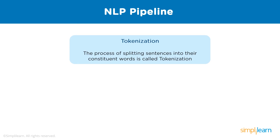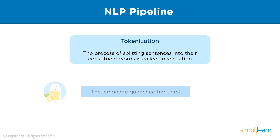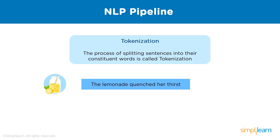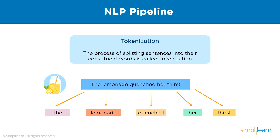The next step is tokenization — the process of dividing a sentence into its constituent words. All the words in a sentence are stored separately, so we can understand the syntactic and semantic information in each sentence, analyzing it word by word. The computer does not understand punctuations and special characters, so those can be removed. For example, from 'The lemonade quenched her thirst,' tokenization produces five tokens: 'the,' 'lemonade,' 'quenched,' 'her,' and 'thirst.'